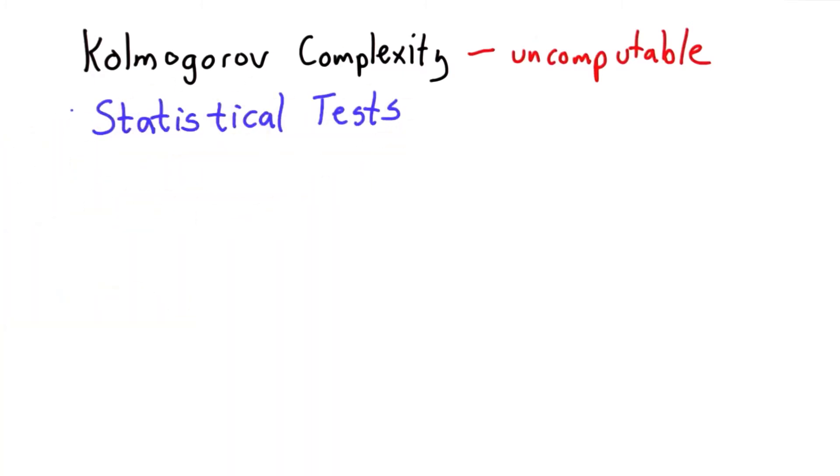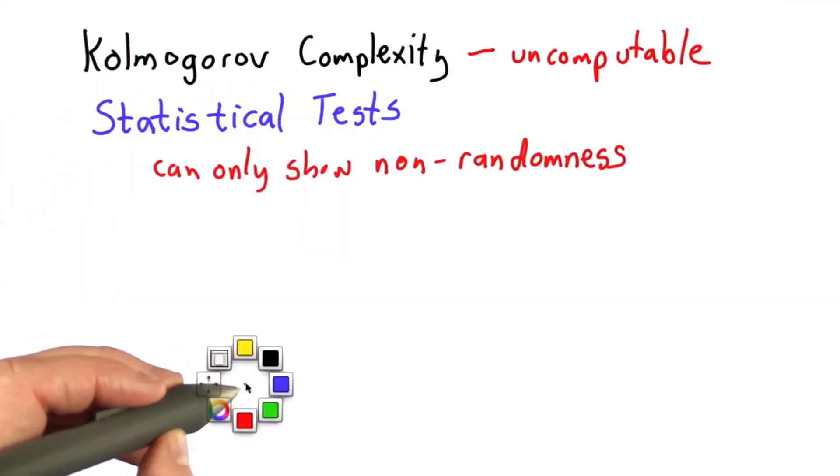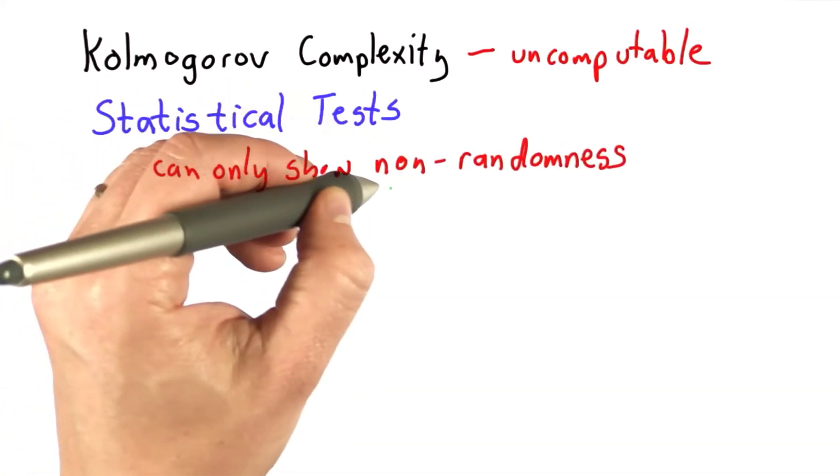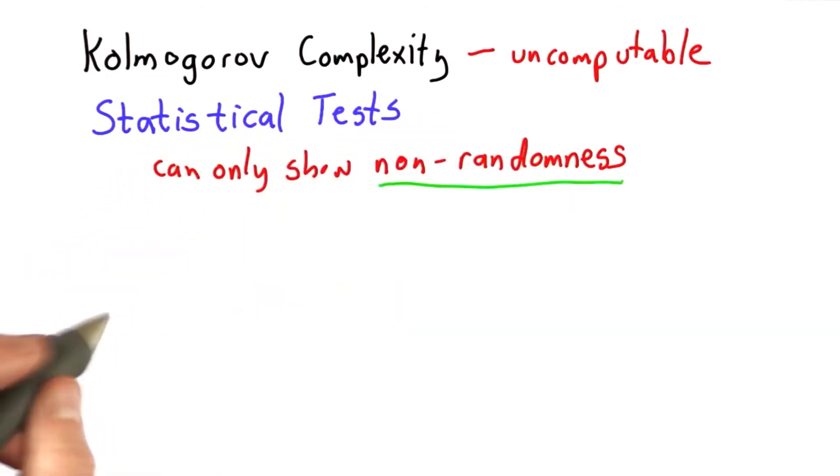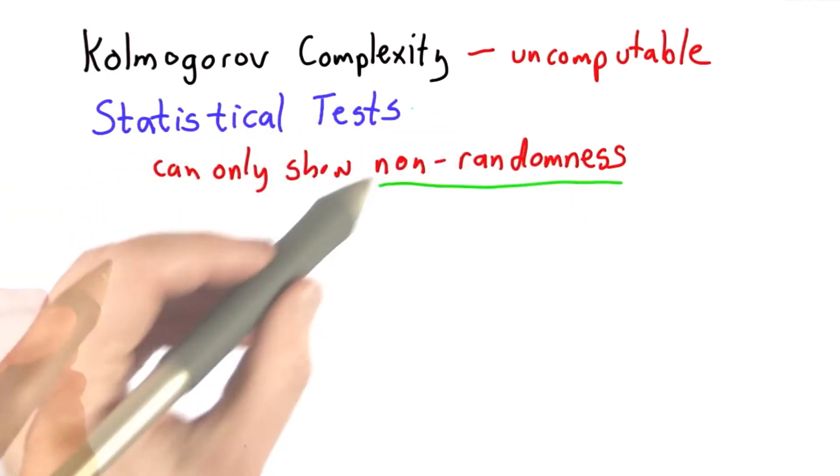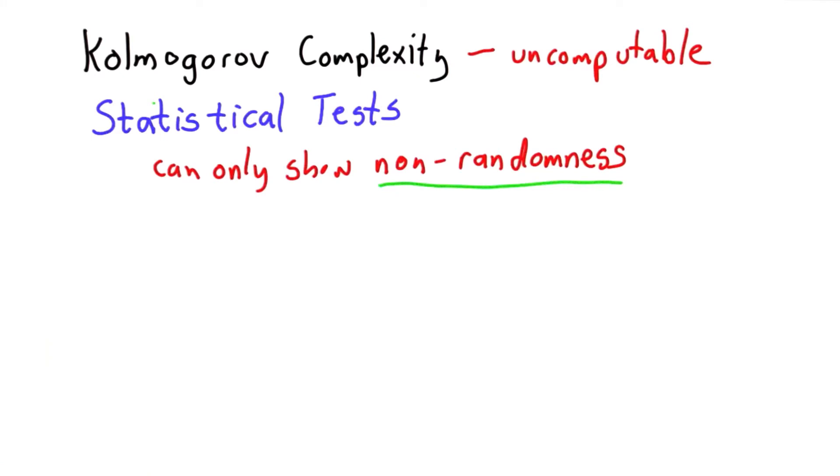The next thing we might think about trying is statistical tests. And this is in fact often used as part of an argument that something produces random numbers. And it should be part of that argument, but it can never be the whole argument. The only thing we can do with a statistical test is show that something is non-random. We can't ever prove that it is random. We could always find some non-random sequence that satisfies all of our statistical tests.